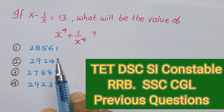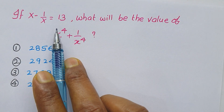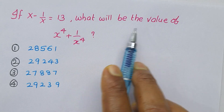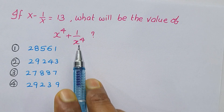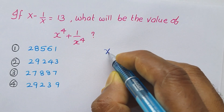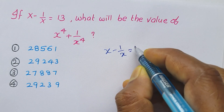Hi friends, observe the question: if x minus 1 by x is equal to 13, what will be the value of x power 4 plus 1 by x power 4?